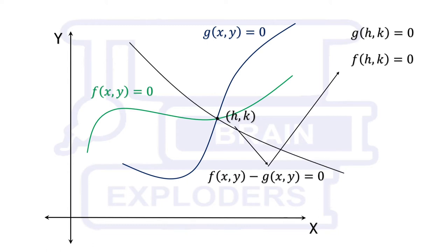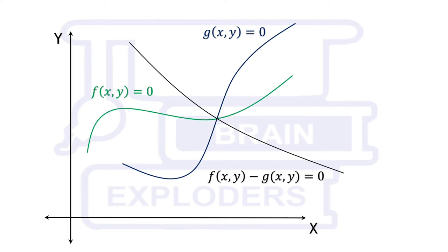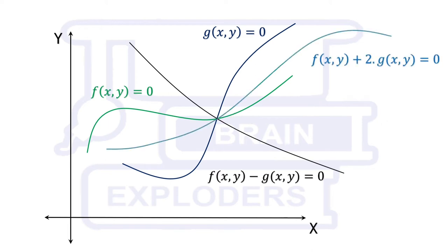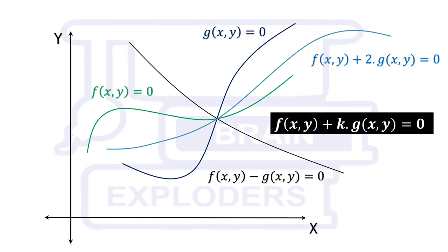With the same logic, we can say that f(x,y) + 2·g(x,y) = 0 also passes through (h,k). In general, f(x,y) + k·g(x,y) = 0 passes through all the intersections of these two curves.